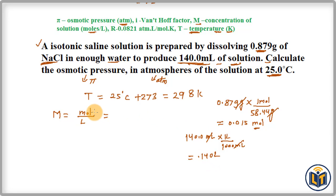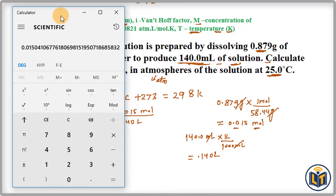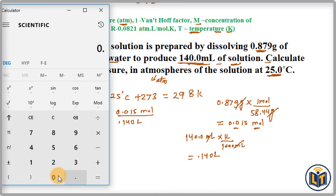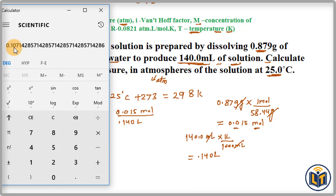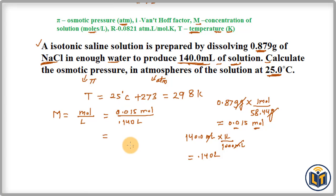Now we plug in the values for molarity: moles = 0.015 mol divided by volume = 0.140 L. Dividing these values gives us a concentration of 0.107 moles per liter.